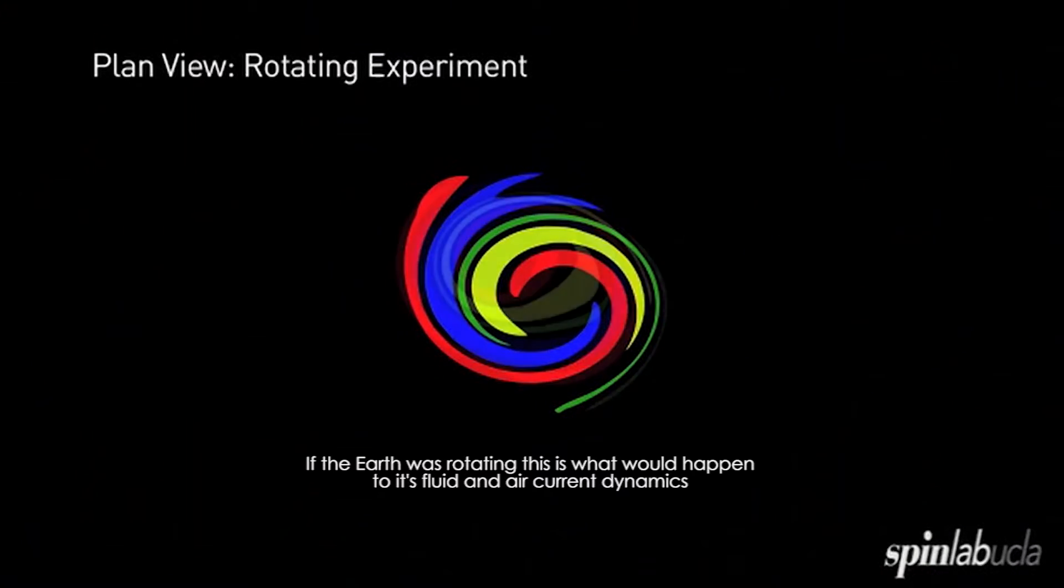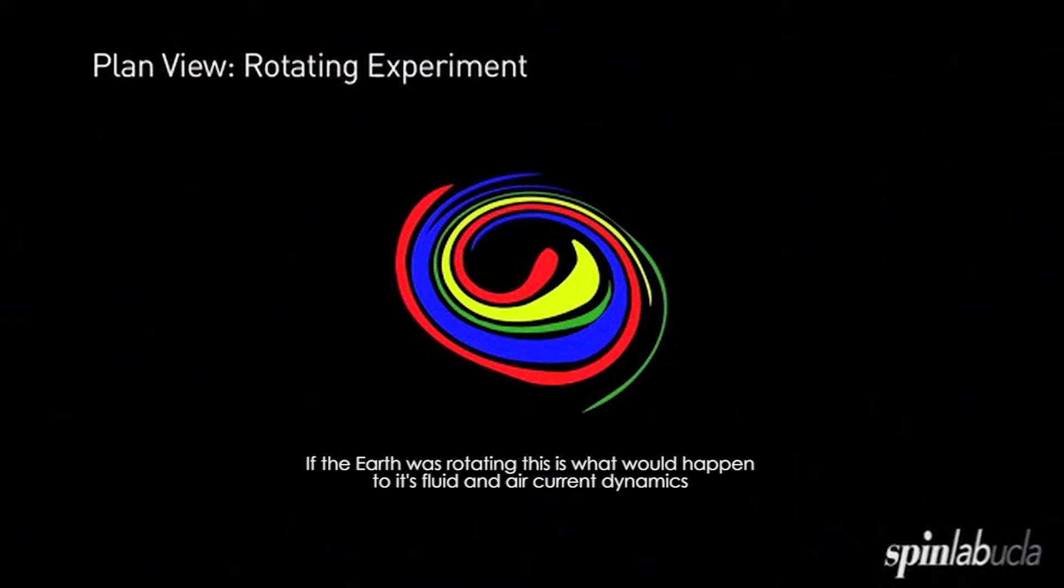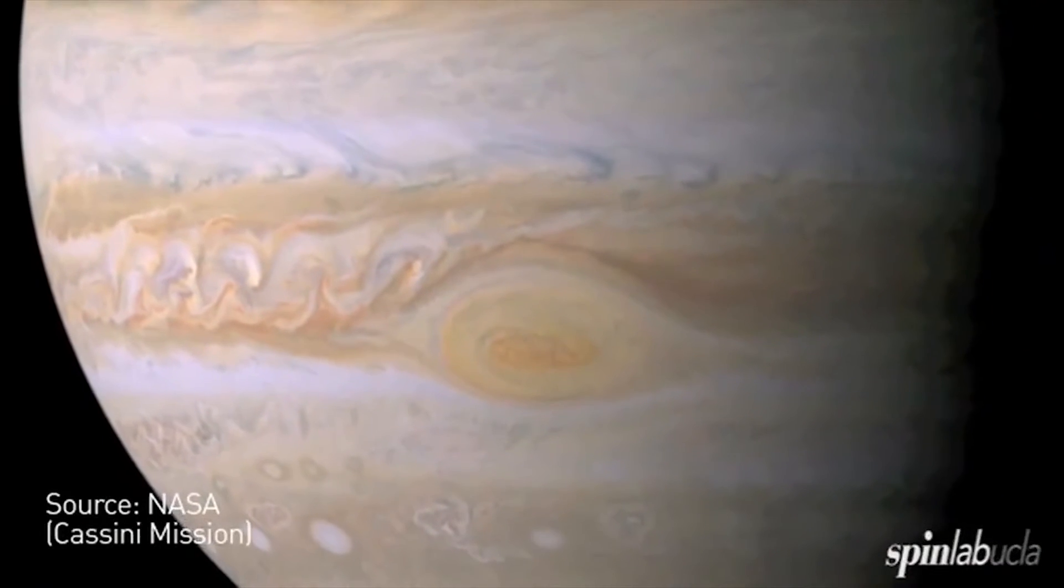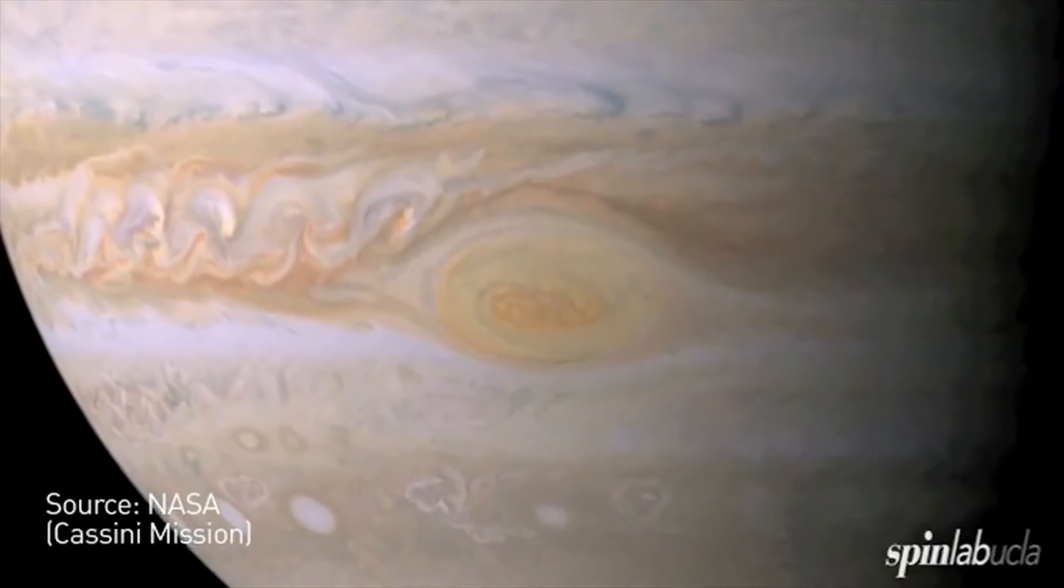So in time, you'll get these amazing filamentary structures that are strongly sheared out, but you won't get full 3D mixing. A lot like what you see in images of vortices on giant planets.